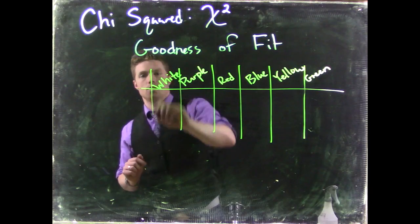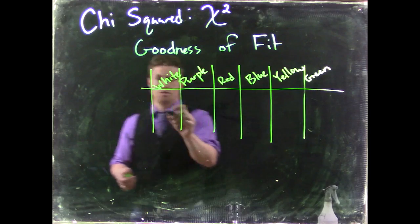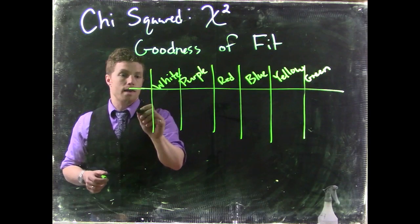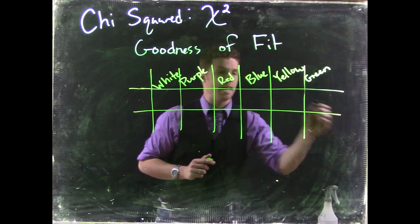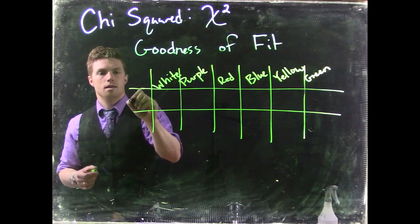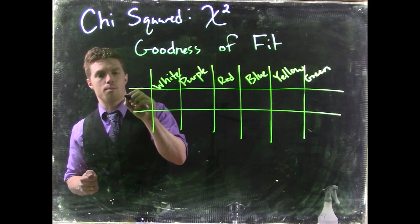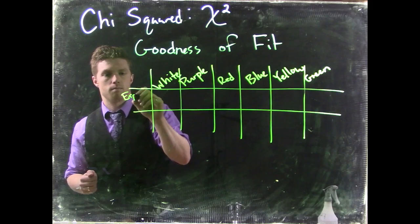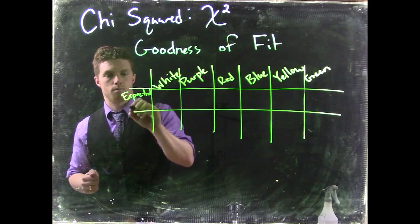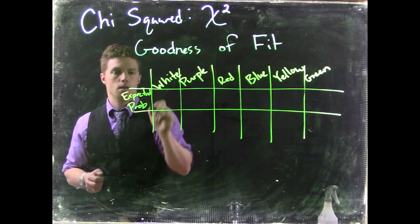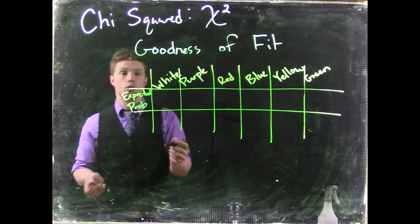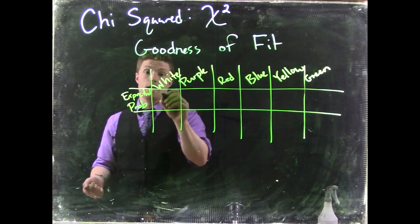Let's say we've got these colors on a six-sided dice. If we have a fair six-sided dice, we could say that our expected probabilities would be uniform.